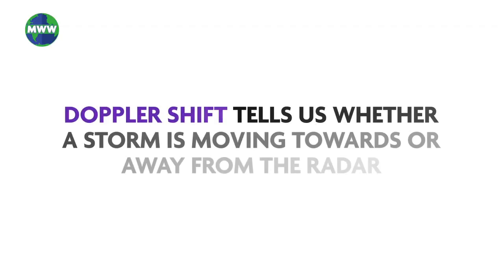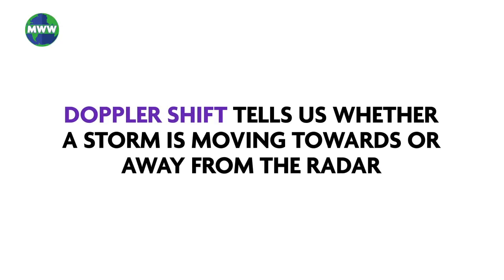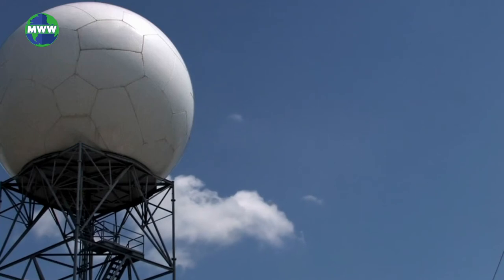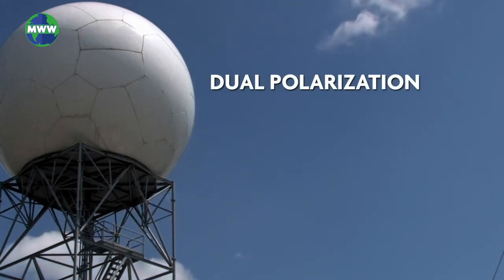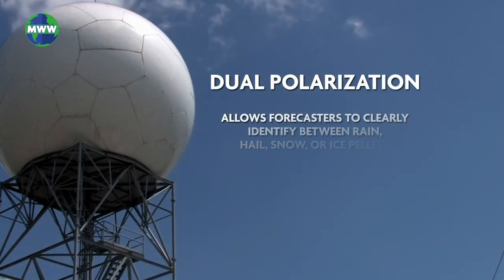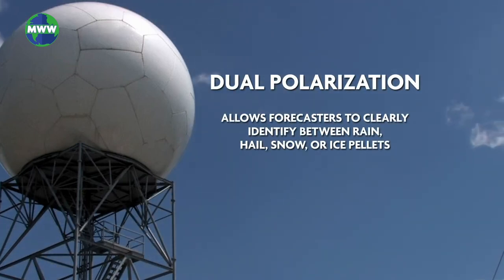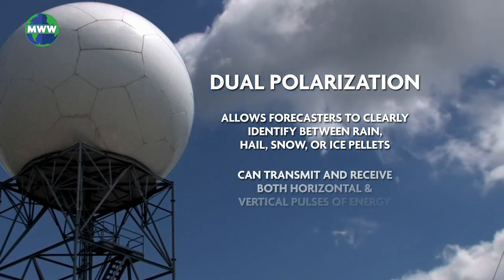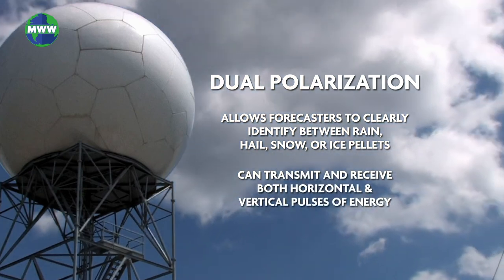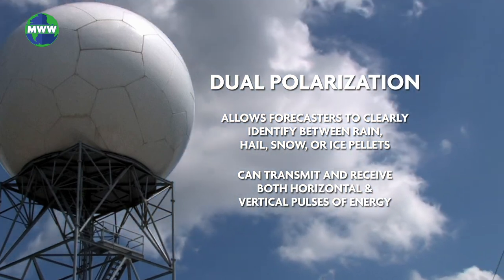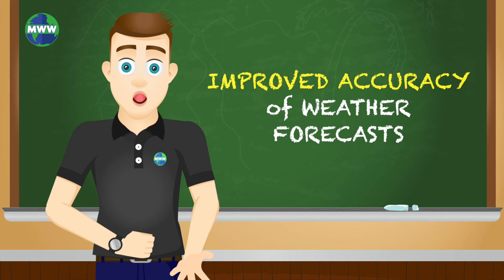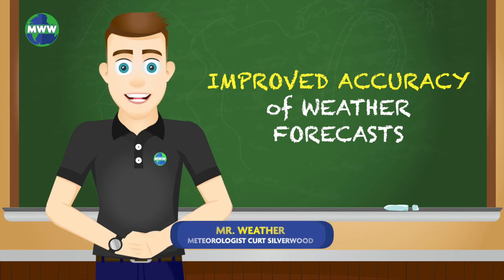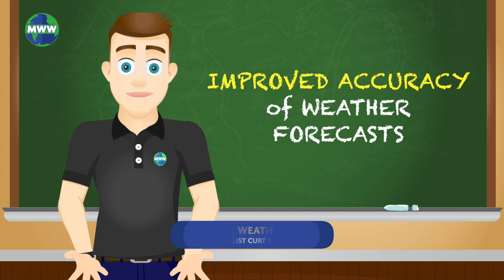Doppler shift tells us whether a storm is moving towards or away from the radar. National Weather Service Doppler radar uses dual polarization, which allows forecasters to clearly identify between rain, hail, snow, or ice pellets. Dual polarization can transmit and receive both horizontal and vertical pulses of energy. Developments like dual polarization have significantly improved the accuracy of radar to provide better weather forecasts.